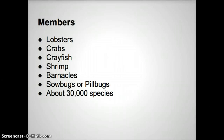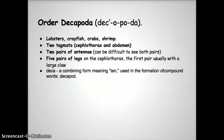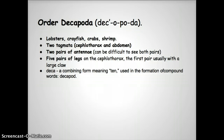Let's take a second and look at two major groups — probably the two groups you would come in contact with the most. The first one is Order Decapoda, and these are the lobsters, crayfish, crabs, and shrimp.